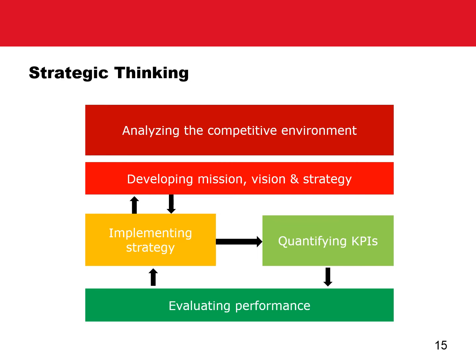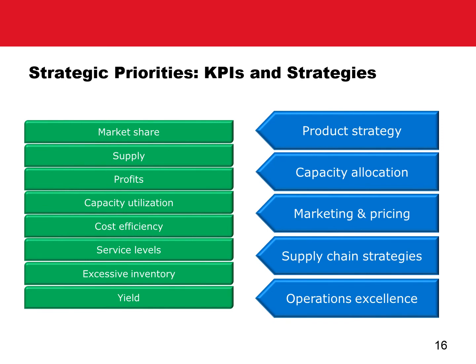After evaluating the performance, they may revise the mission and vision, redesign the strategy, and so on. The game provides a rich array of KPIs and strategies for students to choose. To set the strategic priority, students can choose KPIs such as market share, security of supply, profits, capacity utilization, cost efficiency, service levels, excessive inventory, and yield. To impact these KPIs, students can change product strategy, capacity allocation, marketing and pricing, supply chain strategies, and strategies on operations excellence.